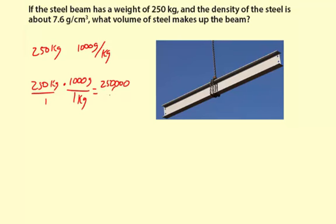And then 1 times 1 is 1, so it's just 250,000 over 1. And the units here, the kilograms, those simplify out because there's 1 in the numerator here, 1 in the denominator here. And we're simply left with the grams, so the unit here will be grams. That means that we have 250,000 grams of steel.